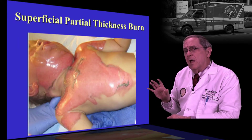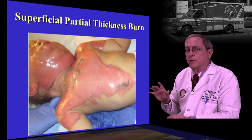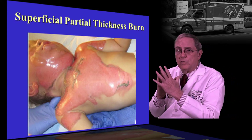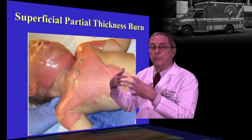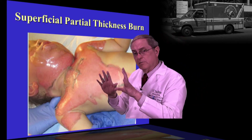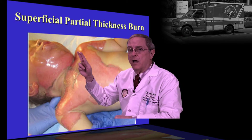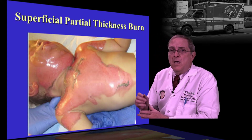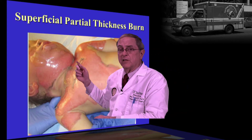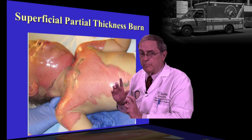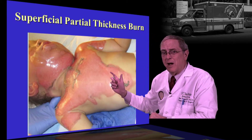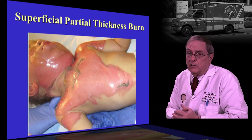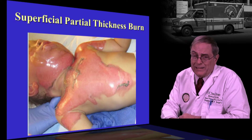This next example shows a child moving from a superficial to a deeper partial thickness burn from a scald mechanism. The blisters have already broken and blister skin is piled up around the neck and lower torso. On the face, where we still see shiny areas, the burn may not be as deep. But on the chest, which looks more white, this is a deeper — almost intermediate — partial thickness burn.